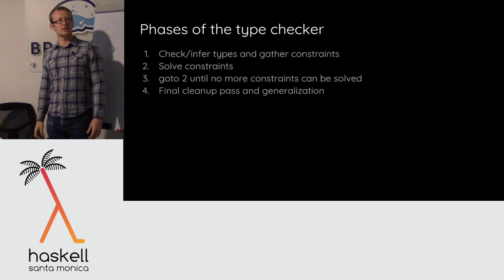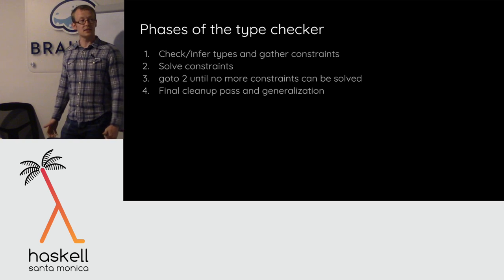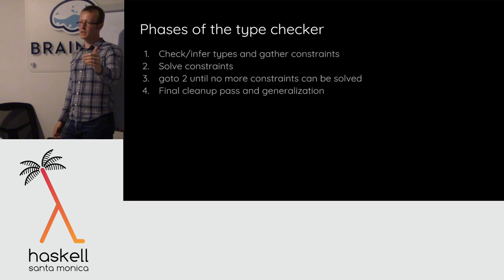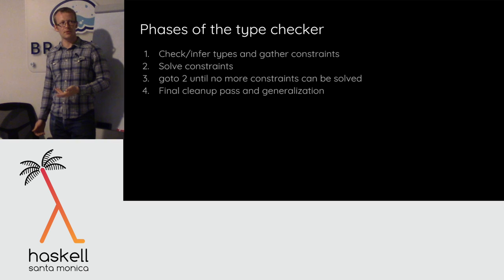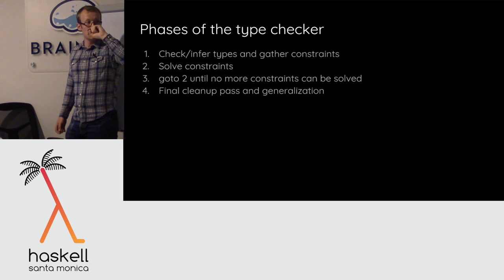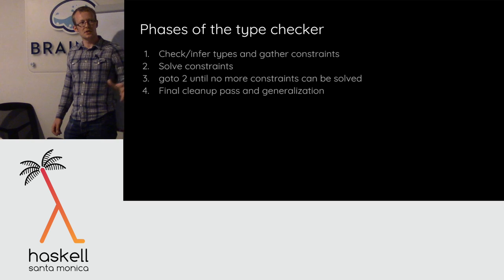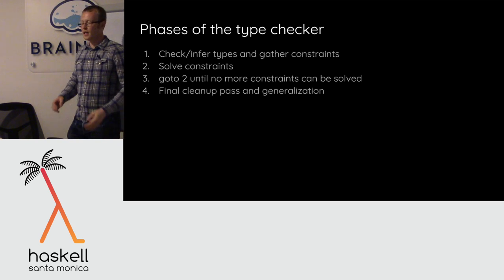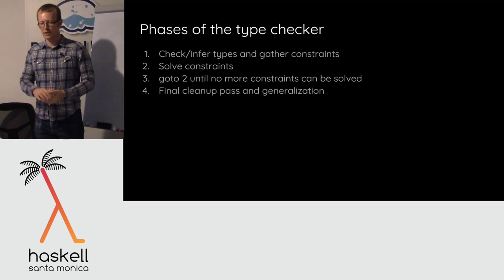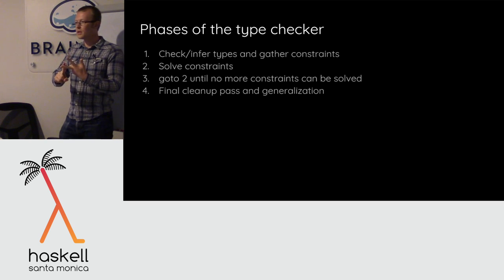The second step is to solve the constraints. In the process of solving, you might learn new information — for example, a functional dependency might fire and give you a new constraint to feed back in. You loop until there are no more constraints to solve. Then there's cleanup: checking that invariants weren't broken, and generalization — any unsolved types become universally quantified type arguments, and any unsolved constraints become constraints on the inferred type.